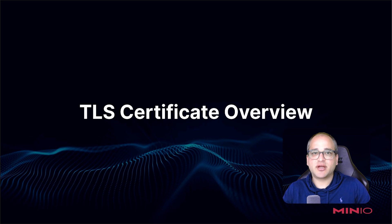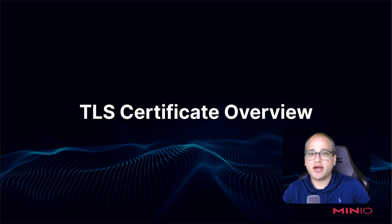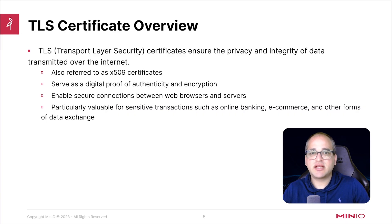Let's dig a bit deeper into the topic of encryption in transit. By in transit, we're just referring to the use of ciphers. We use those to encrypt and decrypt data as it moves back and forth over the network. In our case, one end of the network is going to be a MinIO cluster, and the other end is a client — that client is reading or writing data using MinIO's web UI or making direct API calls. When it comes to encryption in transit, TLS certificates are a key enabler, so let's do a quick refresh of what they are and how they work.